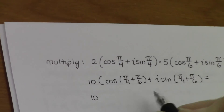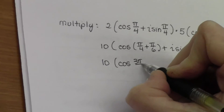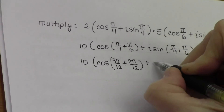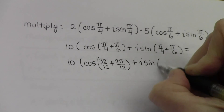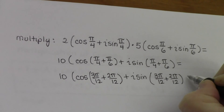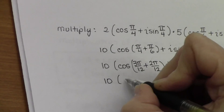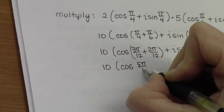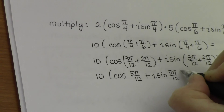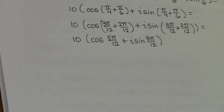The common denominator there is 12. So I have cosine of (3π/12 + 2π/12), and the same thing inside the sine. The concept is easy — it just boils down to getting some extra practice working with fractions. We get cosine of 5π/12 plus i sine of 5π/12. And that's it — that's how you multiply two complex numbers in polar form.